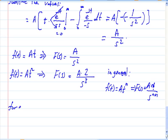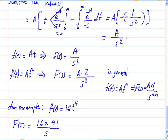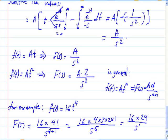For example, let f(t) = 16·t⁴. To transform this, F(s) = 16·4! / s^(4+1). Since 4! = 4×3×2×1 = 24, we get F(s) = 16×24 / s⁵ = 384/s⁵.